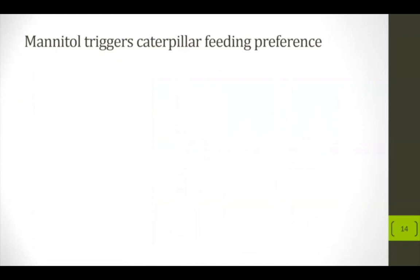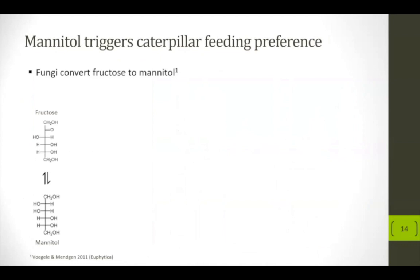Mannitol has been reported for several fungi to be converted from fructose or glucose. Ralph Flügel and his group showed with bean rust how the fungus takes up sucrose from its host, hydrolyzes it into glucose and fructose, takes up the glucose immediately, and converts the fructose into mannitol, which the fungus pumps into the apoplast of the leaf. This is very clever because plants cannot use mannitol. Once the fungus needs energy reserves, it takes up the mannitol again, so it's floating around everywhere in the leaves and also in the fungal tissue itself.